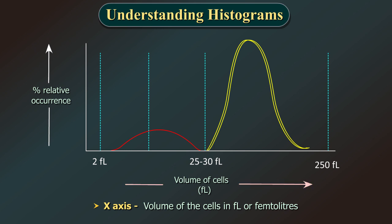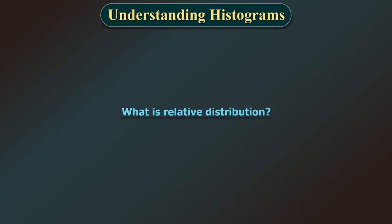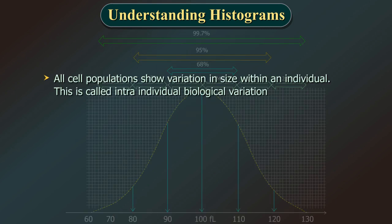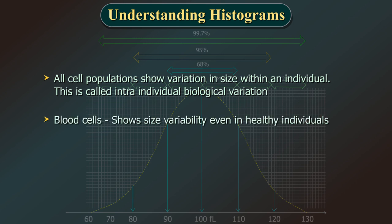The x-axis represents the volume of the cells in FL or femtoliters. The cells are plotted as per their volume. The y-axis represents the percentage relative occurrence. All cell populations show variation in size within an individual — this is called intra-individual biological variation. Blood cells of any particular kind, for instance RBCs, have size variability even in health within an individual; however, this variability has certain limits.